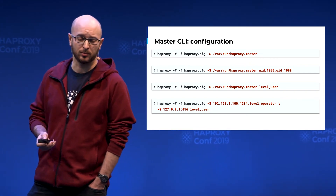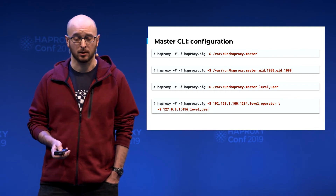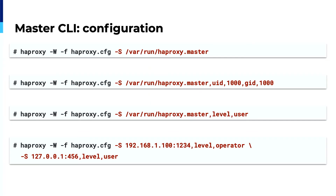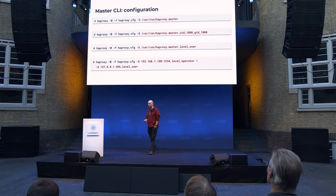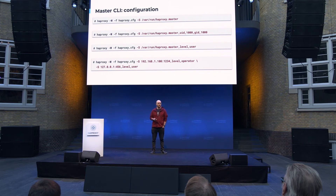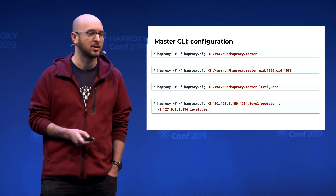You just have to put dash-S with a bind address, which can be a path or an IP, and you can use any keywords that are useful — the same keywords as the bind line in the HAProxy configuration. For example, you can change the UID and GID. You can even use SSL if you want. You can also use several master CLIs. For example, you can use one CLI with level operator and another CLI with level user, which will be basically read-only.